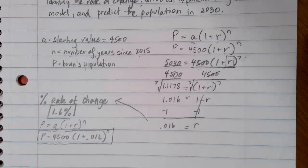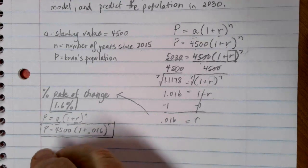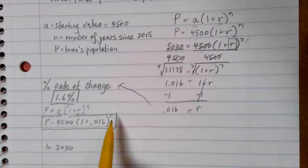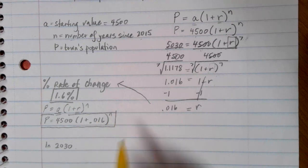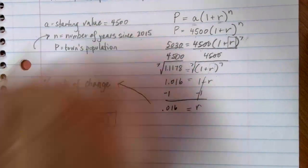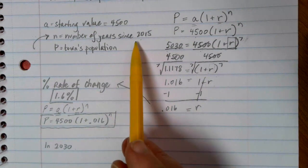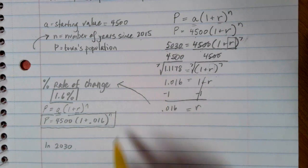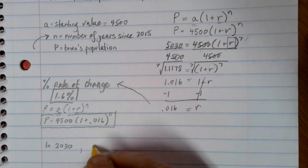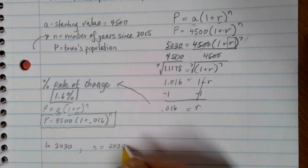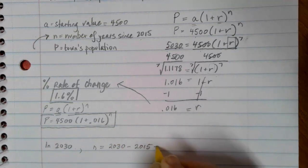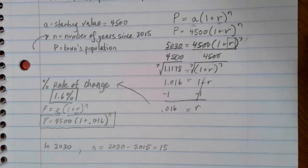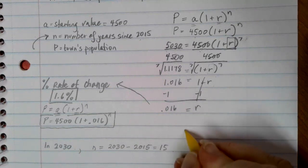The last part of the question asks us to predict the population in 2030. It's very important to remember that your years are based on whatever the starting value was. So in this case, my starting value is in 2015. So if I want to find my N value, I have to figure out how many years 2030 is since 2015. So I need to do that subtraction. In this case, I find that it's 15 years later.